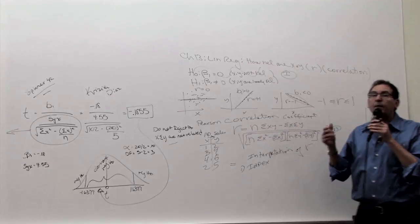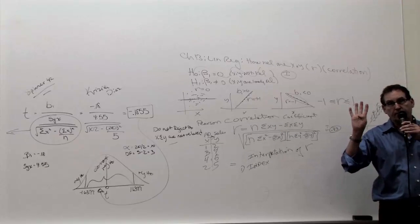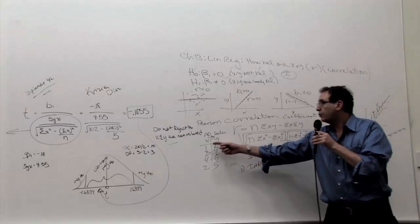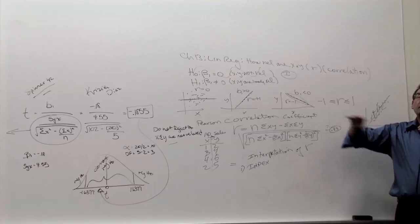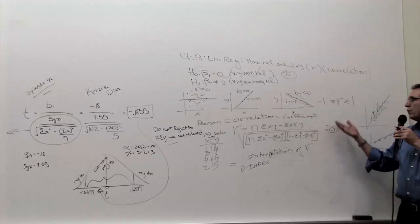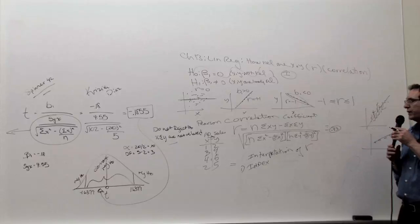The way we're going to resolve it is by pointing out that we only have four pairs of numbers here. With four pairs of numbers, this rule of thumb—that the closer it is to 1—doesn't really work. It only works when you have like 20 or 30 numbers. With four pairs, you can have a high number and still not be related. That's important to keep in mind.